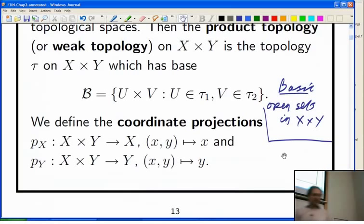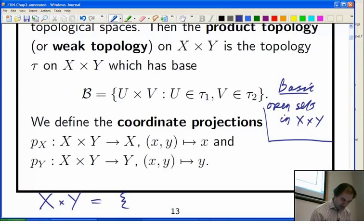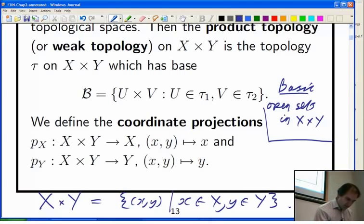OK, coordinate projections. You've got two sets. You've got the Cartesian product. Remember what the Cartesian product is. X × Y is the set of all ordered pairs where x is in X and y is in Y. If either X or Y is empty, the product is empty, even if the other one isn't. Then these coordinate projections are just the empty function defined on the empty set, and they're not very exciting.